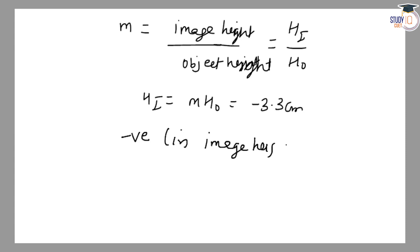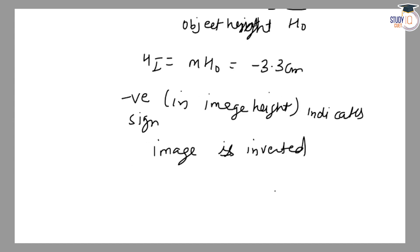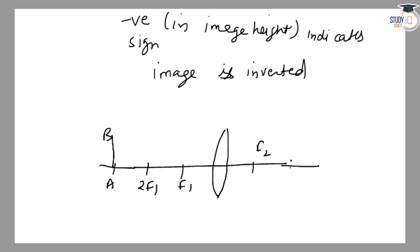Negative sign in magnification means the image is in the opposite direction, behind the lens. If we want to draw the diagram: this is the lens, with focus F₁, 2F₁, then F₂ and 2F₂.